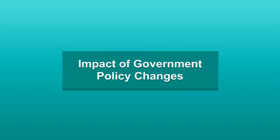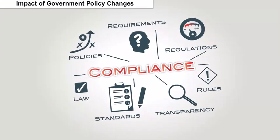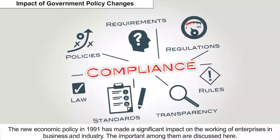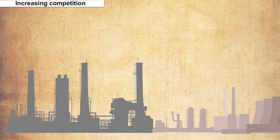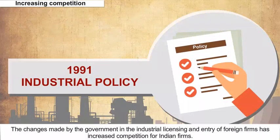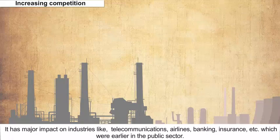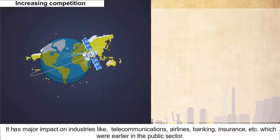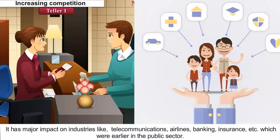Impact of Government Policy Changes: The new economic policy in 1991 made a significant impact on the working of enterprises in business and industry. Increasing Competition: The changes made by the government in industrial licensing and entry of foreign firms increased competition for Indian firms. It had a major impact on industries like telecommunications, airlines, banking, and insurance, which were earlier in the public sector.